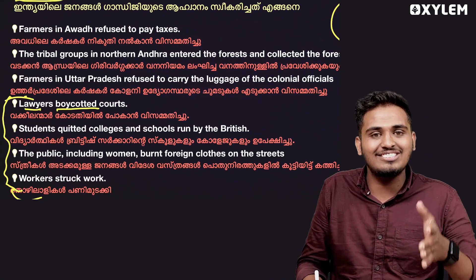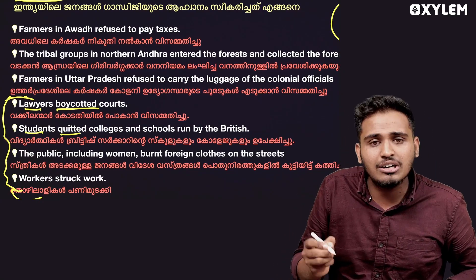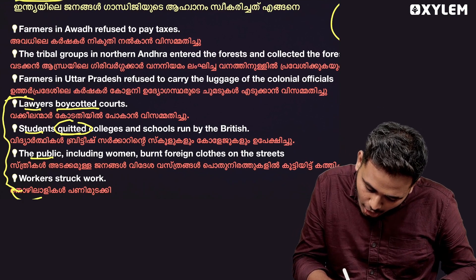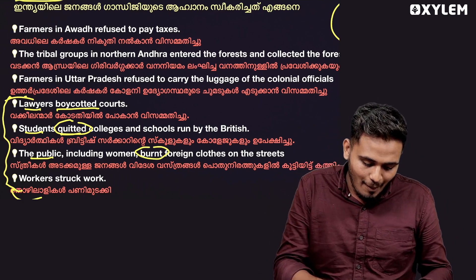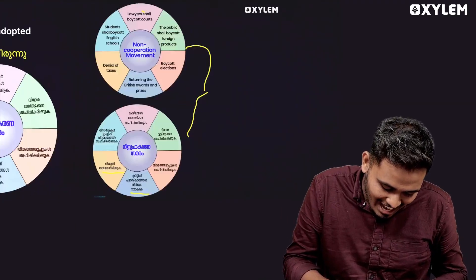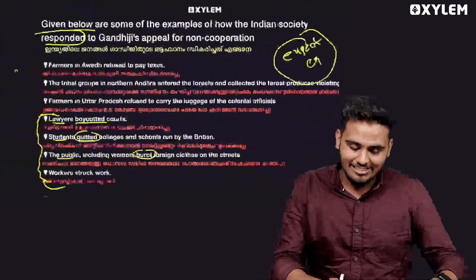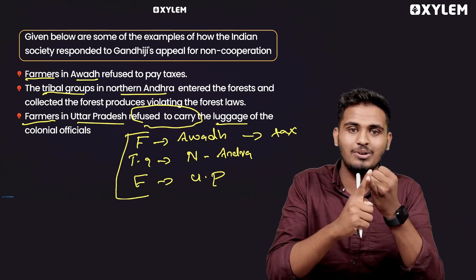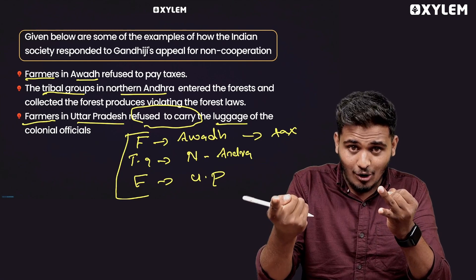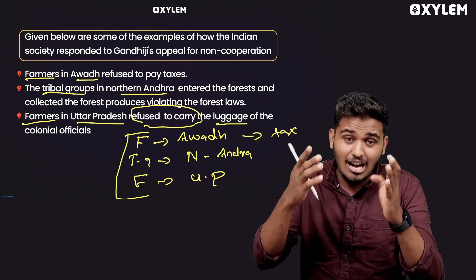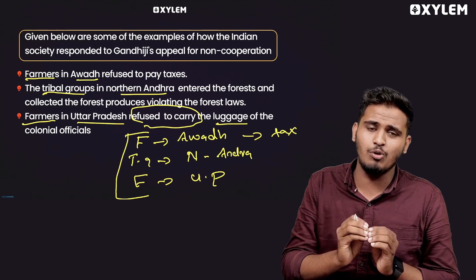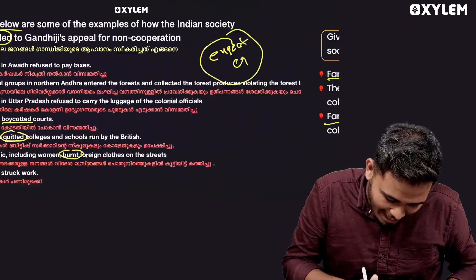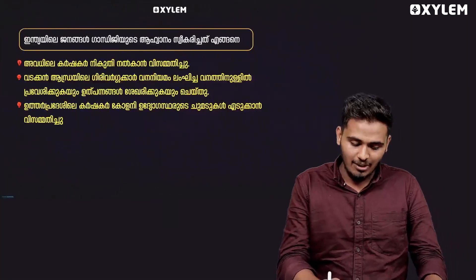Lawyers boycotted courts. Students boycotted schools. Public boycotted and burned foreign products. We have studied these examples — students boycotted the schools, lawyers boycotted the courts, and the public including women boycotted foreign products. We have studied these examples.